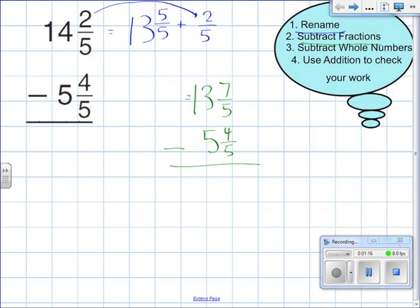7 minus 4, which is my numerator, gives me 3. And my denominator stays the same, which is 5. And now I take care of my whole numbers. 13 minus 5 equals 8. So my answer is 8 and 3 fifths.